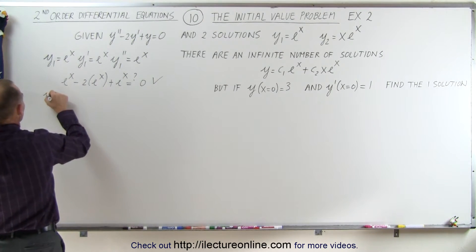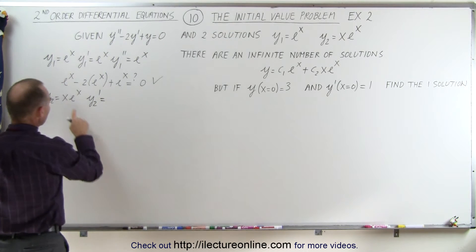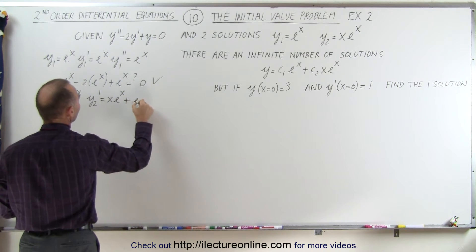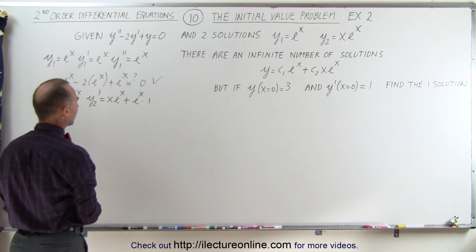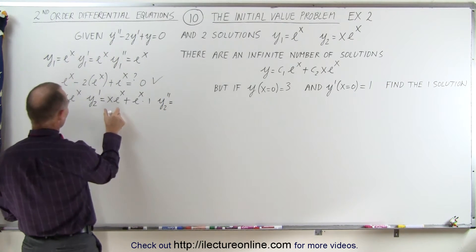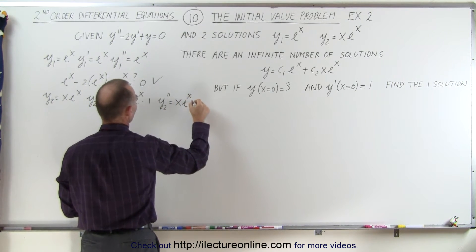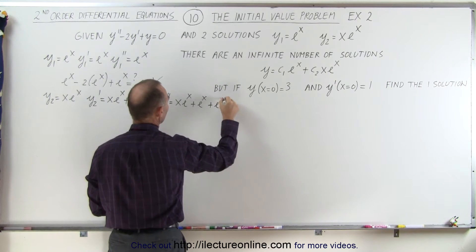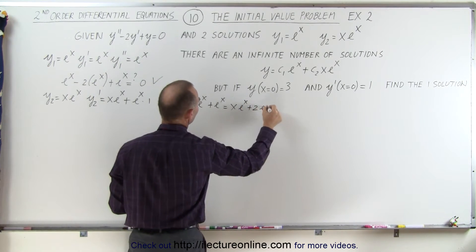Taking y2 equal to x times e to the x, then y2' — since we have a product here — we take the first times the derivative of the second, plus the second times the derivative of the first, which is just 1. Then we take the second derivative, y2'', and that gives us x e to the x plus e to the x, plus another e to the x, which gives us x e to the x plus 2 e to the x.